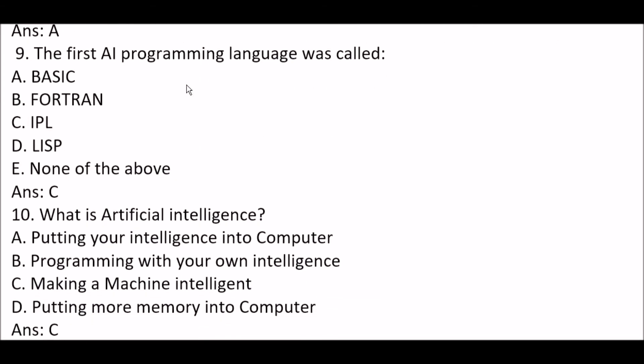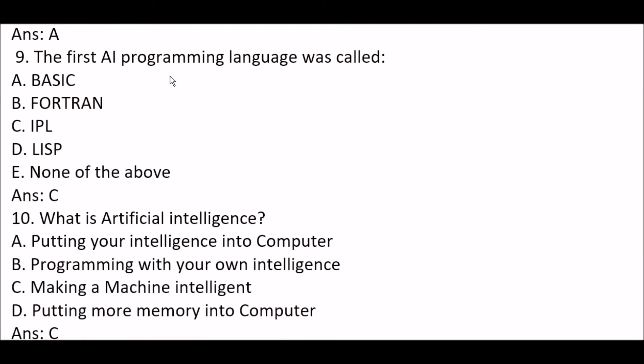Next question: the first AI programming language was called — Option A: BASIC. Option B: Fortran. Option C: IPL. Option D: Lisp. The right answer is Option C — IPL was the first AI programming language.